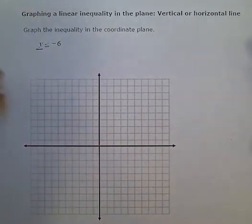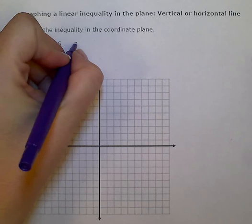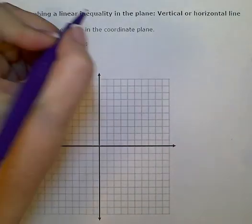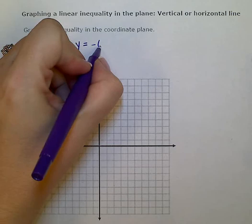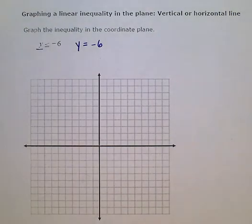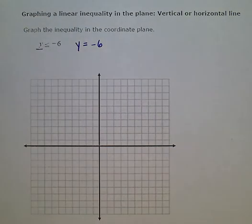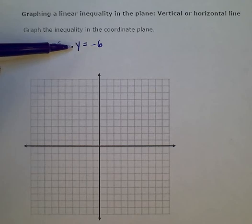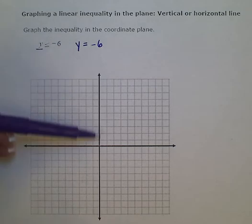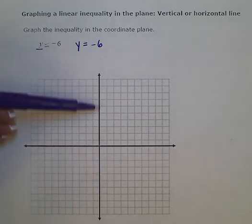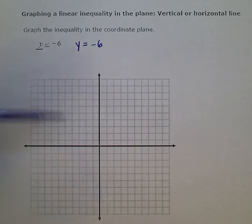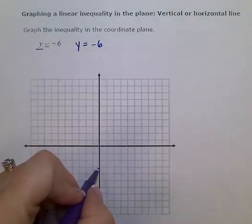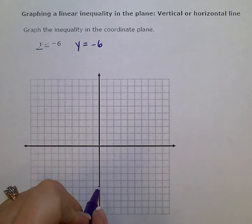So the associated or corresponding equation would be y equals negative 6. That's going to be the boundary line to my inequality. So since I only have a y, I know I'm only going to have a y-intercept, or in other words, my line is only going to cross the y-axis. So my line is going to cross right there at negative 6.